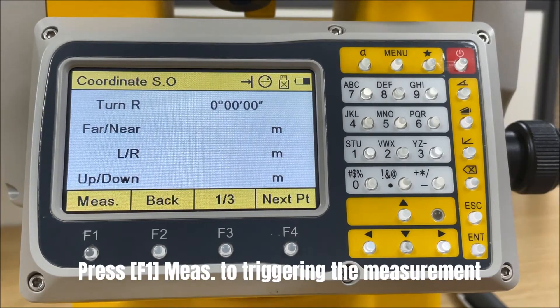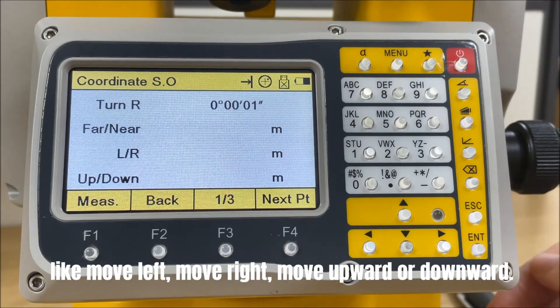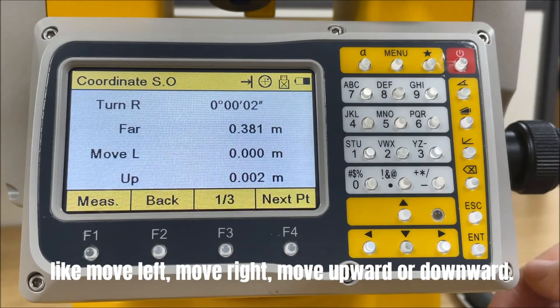Press F1 to trigger the measurement and find the point on sight based on the guidance, like move left, move right, move upward, or downward.